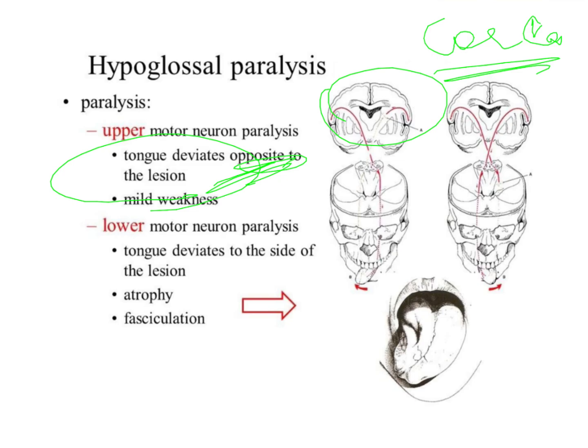On the other hand, when you have a lower motor neuron paralysis, the tongue deviates to the side of the lesion — that means it is going to move to the side of the paralysis. In lower motor neuron paralysis, when the paralysis is occurring in the brainstem, if it is on the right side, the entire organ will shift to the right side.